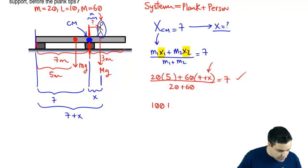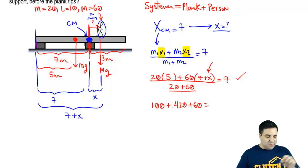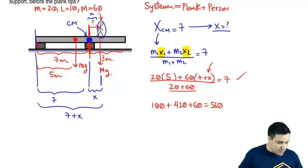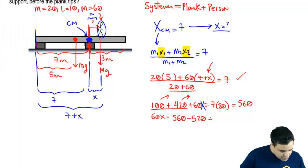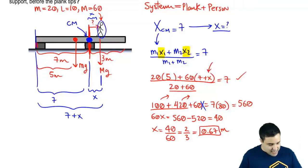So I'm going to multiply seven times 80 here. And that's going to be 560. I forgot that this is 60 X, of course. So I'm going to send these two guys to the other side. So I'm going to get 60 X equals 560 minus these two, which is 520. And the result here is 40. So I have X equals 40 divided by 60. And 40 divided by 60 is four over six or two over three, which is 0.67 meters. This means that X is 0.67 meters. It's how much farther he can go beyond that point.